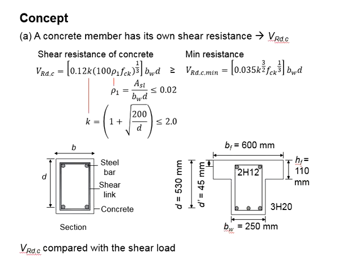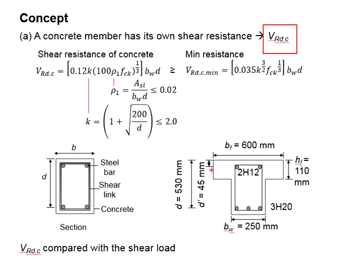In the function here, you have K which is determined by the effective depth, and you have Rho 1, representing the reinforcement ratio — quantifying a ratio in terms of the areas of longitudinal reinforcement per the effective shear areas of the section. This VRDC is to be compared with the shear load.